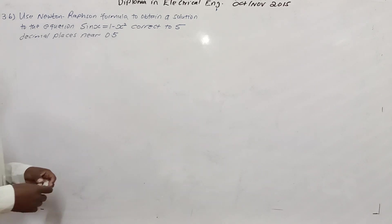Hi, welcome to our next question, which is from my past paper, October November 2015. It's question 3b, and we are told to use the Newton-Raphson formula to obtain the solution. The equation sine x equals 1 minus x squared, correct to 5 decimal places, near 0.5.